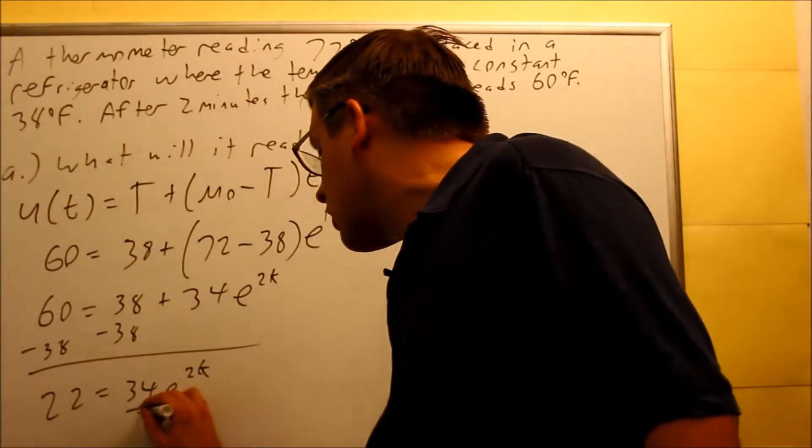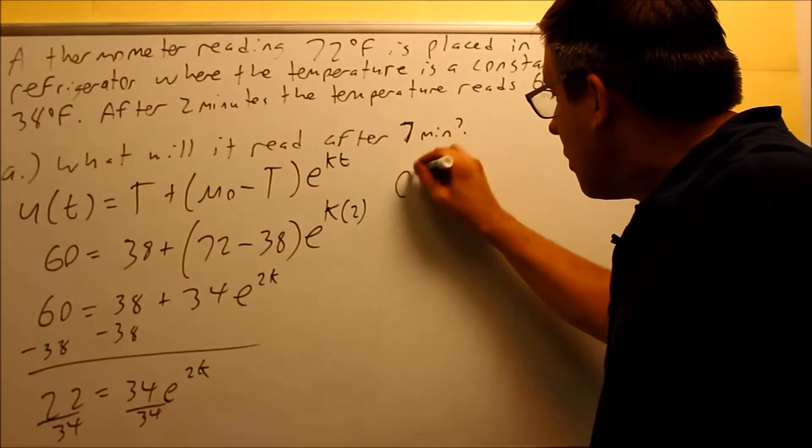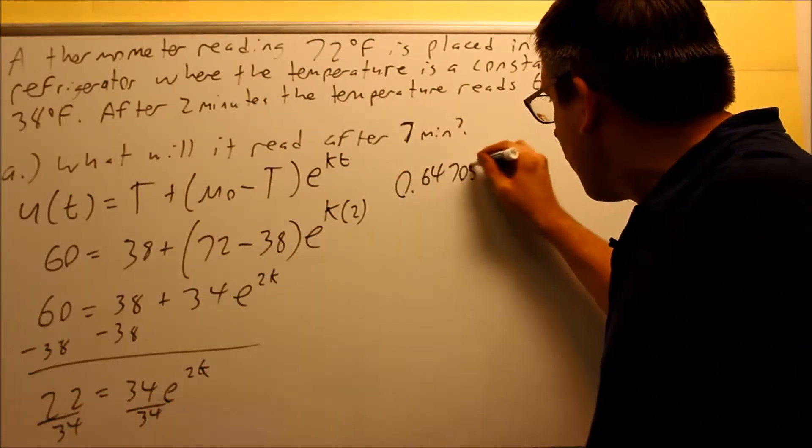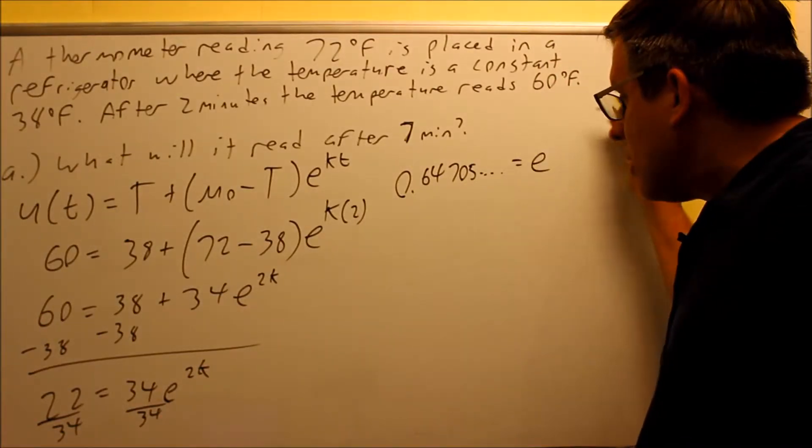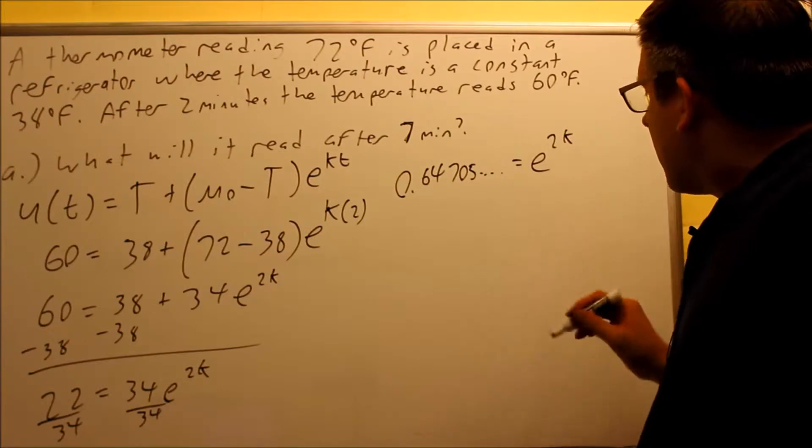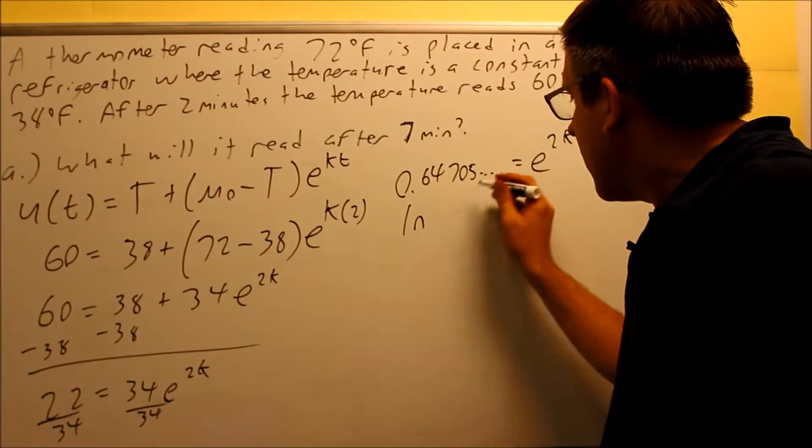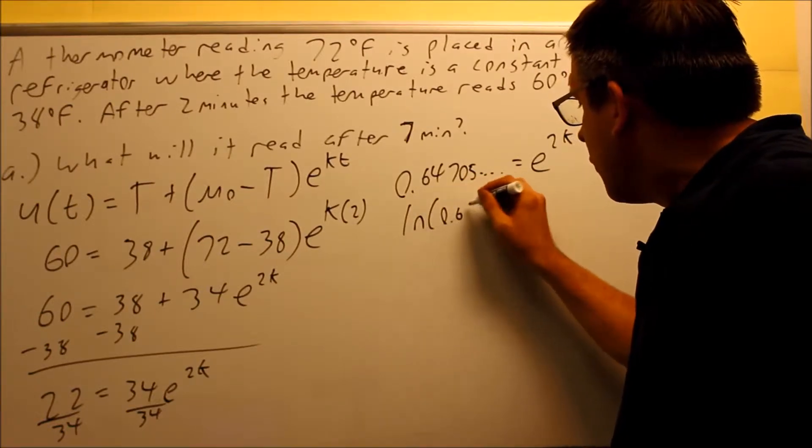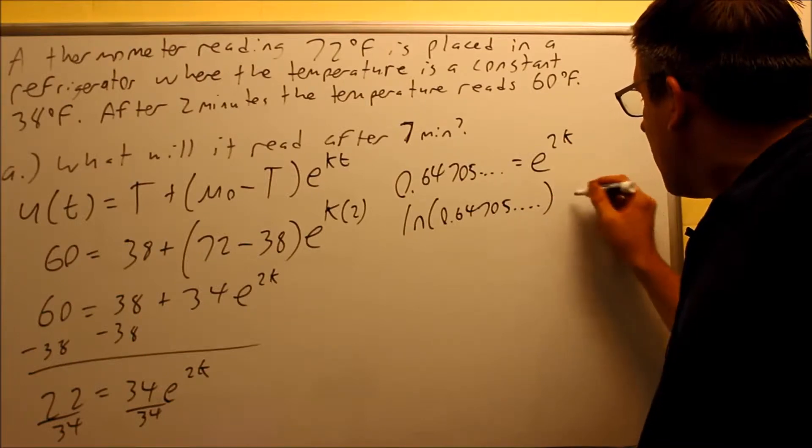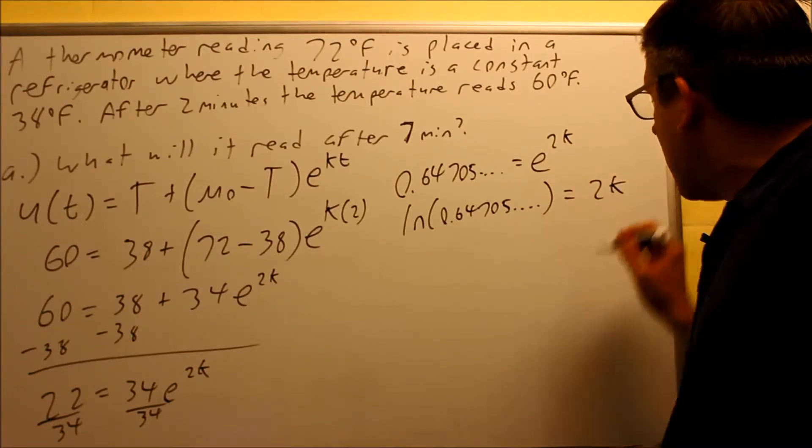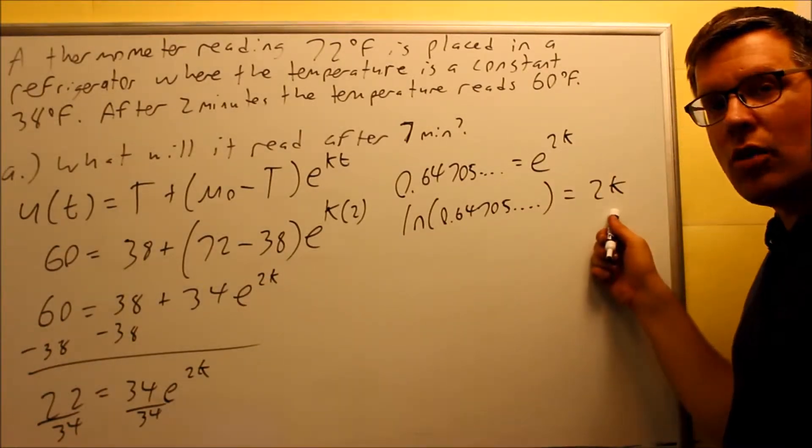Now you want to divide both sides by 34. You get 0.64705 and more decimals equals e^(2k). When I take the natural log of both sides, keep that whole entire decimal in your calculator, don't round it until the very end. This is going to turn into 2k. Natural log of the base e is going to disappear and you just get 2k only.